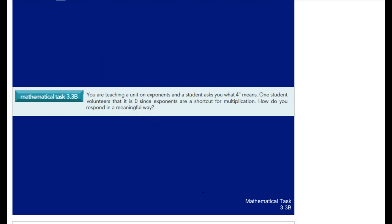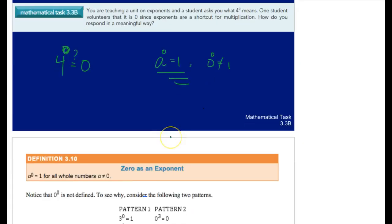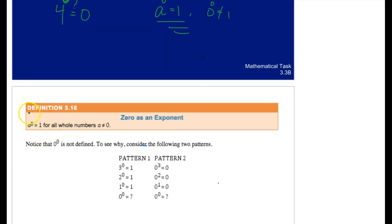It's an important question to think about. A student is asking, basically, is saying 4 to the 0 equals 0. And even you might think immediately, oh yeah, that's right, but it isn't. What you've learned in your algebra classes is that any number to the power of 0 is always equal to 1. However, 0 to the power of 0 is not equal to 1. That is a definition. Mathematicians have defined that to be true, any number to the power of 0 is 1 for all whole numbers.